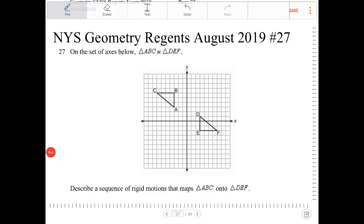On the set of axes below, triangle ABC is congruent to triangle DEF. Describe a sequence of rigid motions that maps triangle ABC onto triangle DEF.